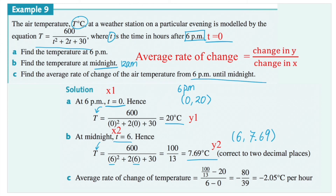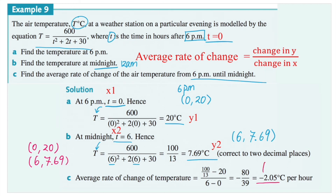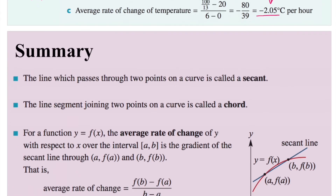Part (c): find the average rate of change of temperature from 6 p.m. to midnight. Our two ordered pairs are (0, 20) and (6, 7.69). Average rate of change equals difference in temperature over difference in time: 7.69 minus 20 over 6 minus 0, which equals negative 2.05 degrees Celsius per hour. The negative sign means the temperature is going down as the night progresses.